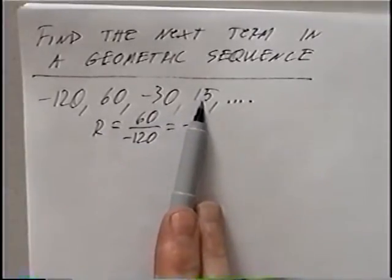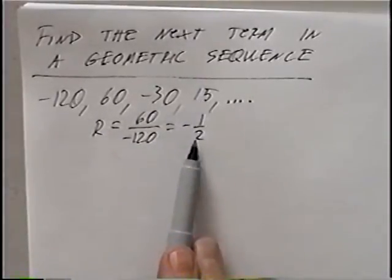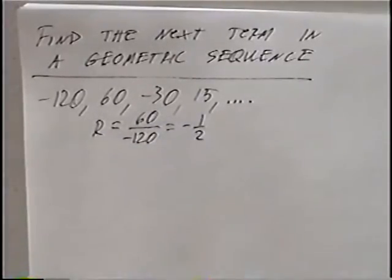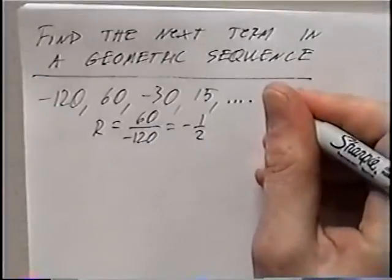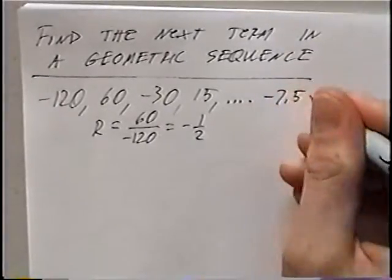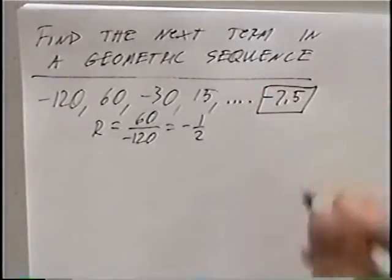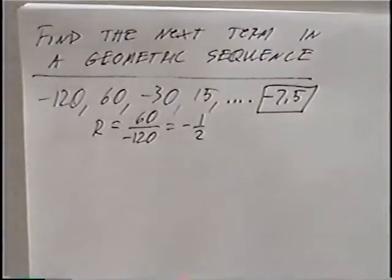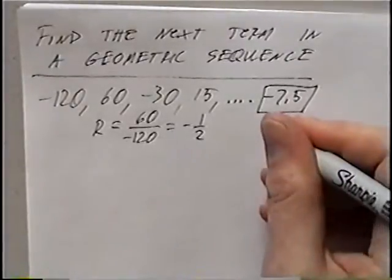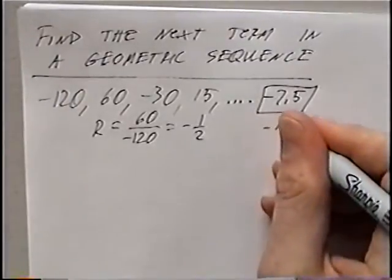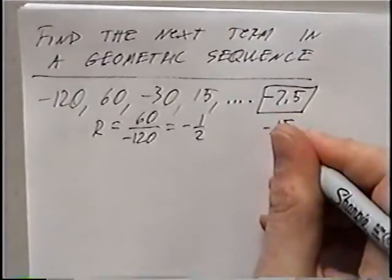The sequence is -120, 60, -30, 15. Since r is negative one-half, the next term is 15 times negative one-half. In decimal form, that would be negative 7.5. You could also write it as negative 15 over 2.